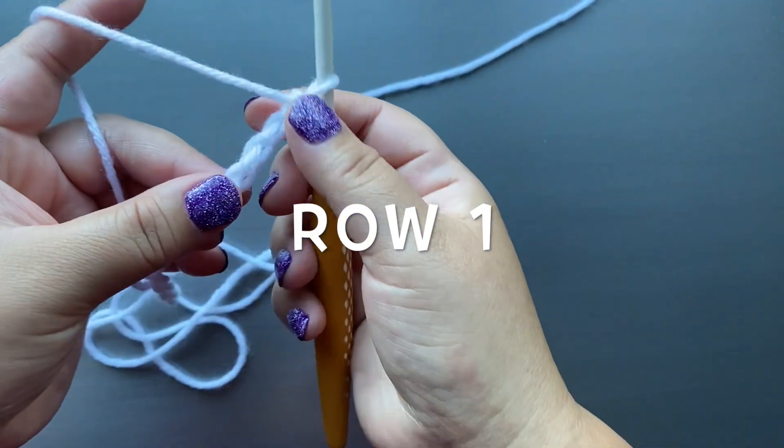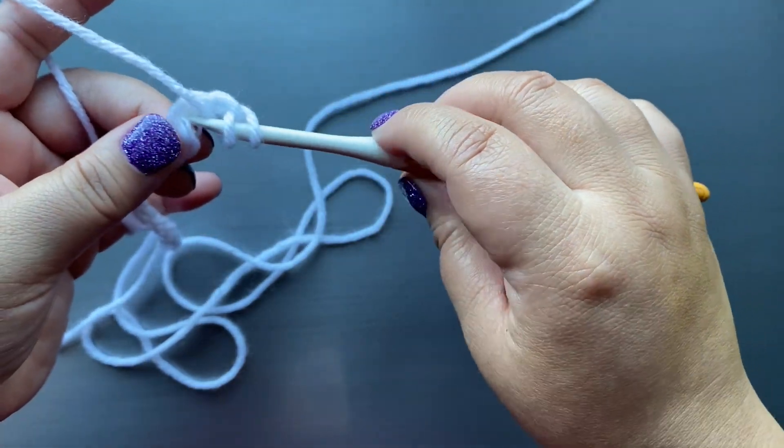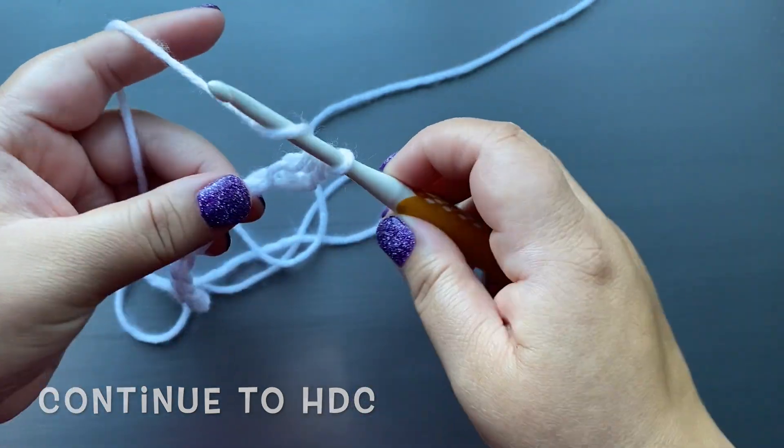Row one. Half double crochet into the third chain from the hook. Continue to half double crochet for the rest of the row.